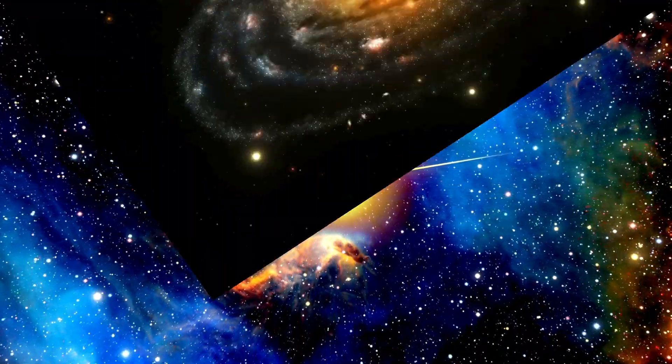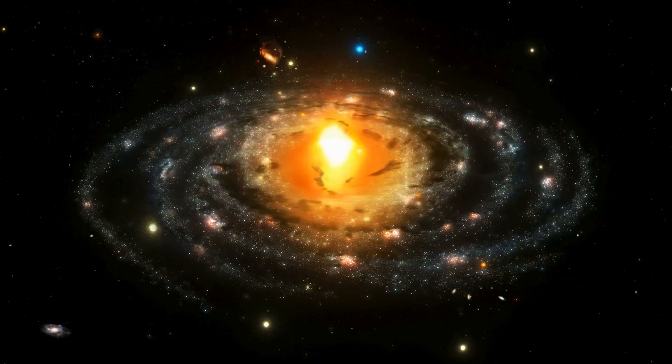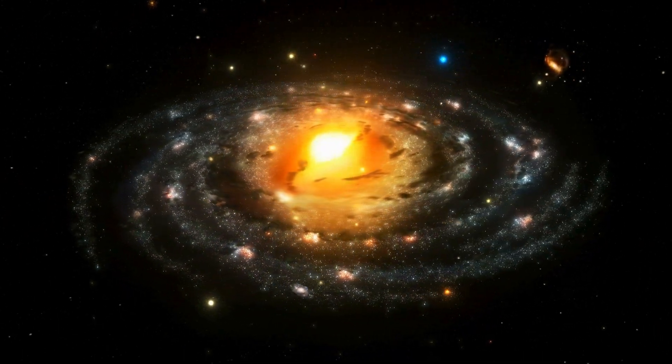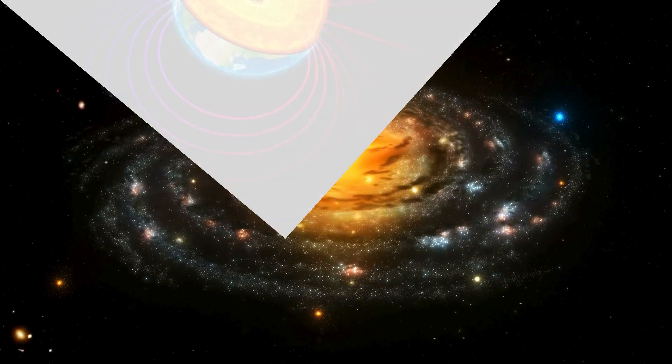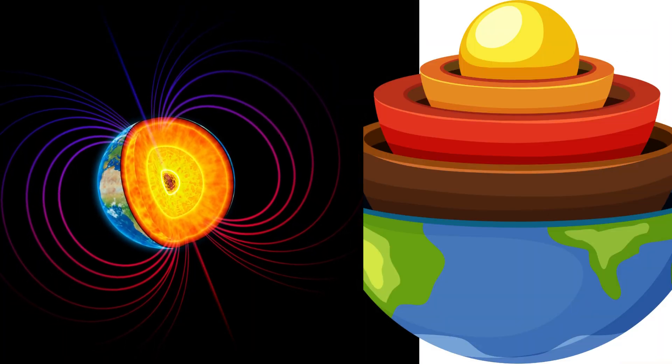Over billions of years, this iron became part of the dust and gas that coalesced into our planet. The process of Earth's formation and its molten state allowed iron to sink to the core, where it remains abundant.